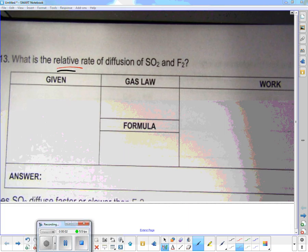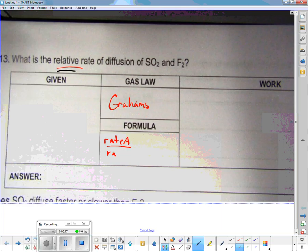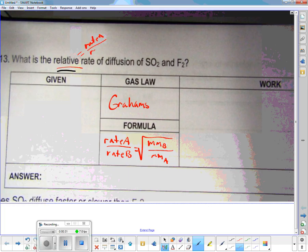Okay, so the relative rate, this is number 13 on daily assignment 1. It's a giveaway that this is Graham's Law.